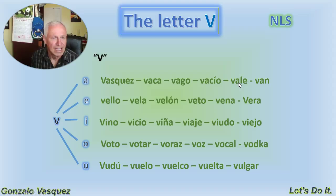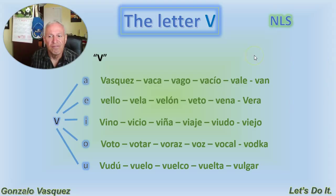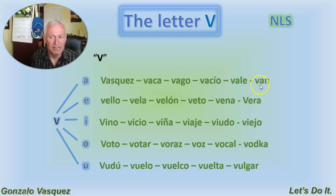Vago is a lazy person who likes to do nothing. Vacio, vale — it's like a receipt that you signed, promising that you were going to pay something. Van. Once again, la V con la A: va — Vázquez, vaca, vago, vacio, vale, van.